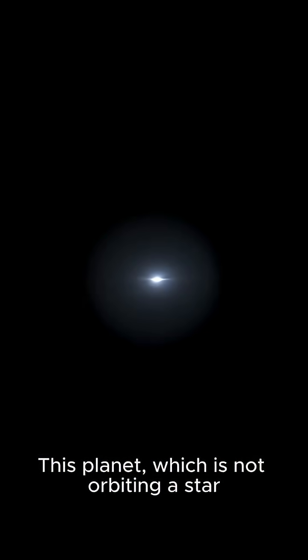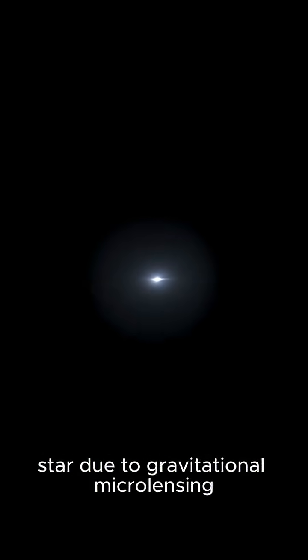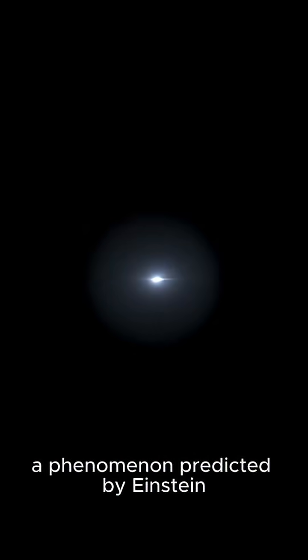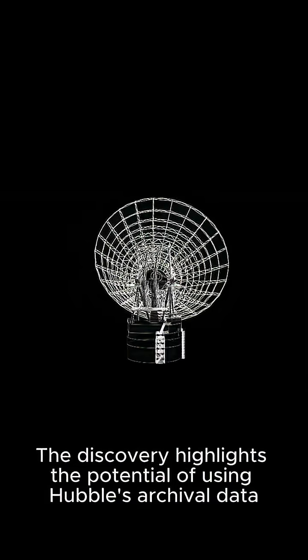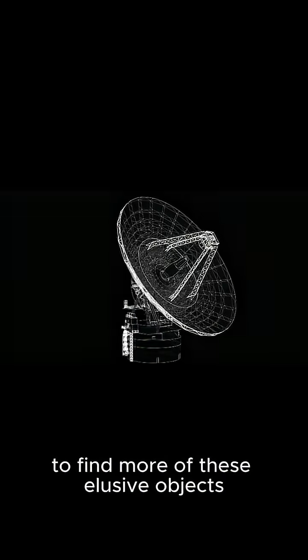This planet, which is not orbiting a star, was found by observing a brief brightening of a background star due to gravitational microlensing, a phenomenon predicted by Einstein. The discovery highlights the potential of using Hubble's archival data to find more of these elusive objects.